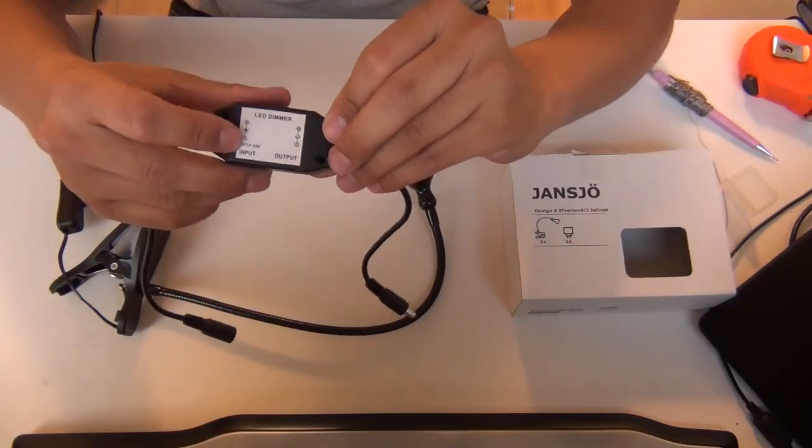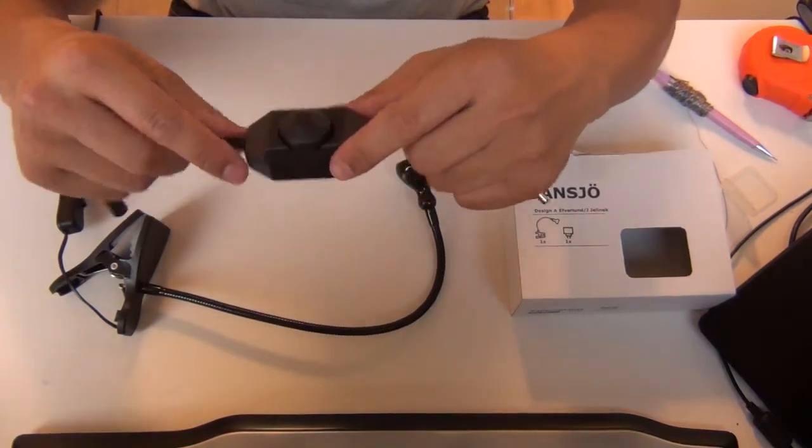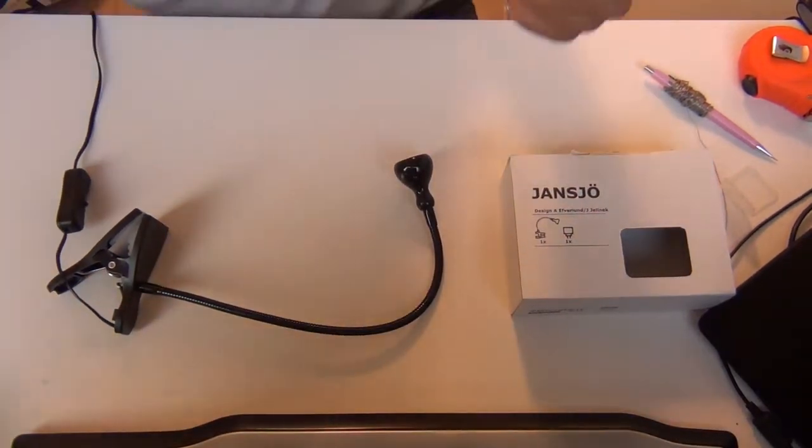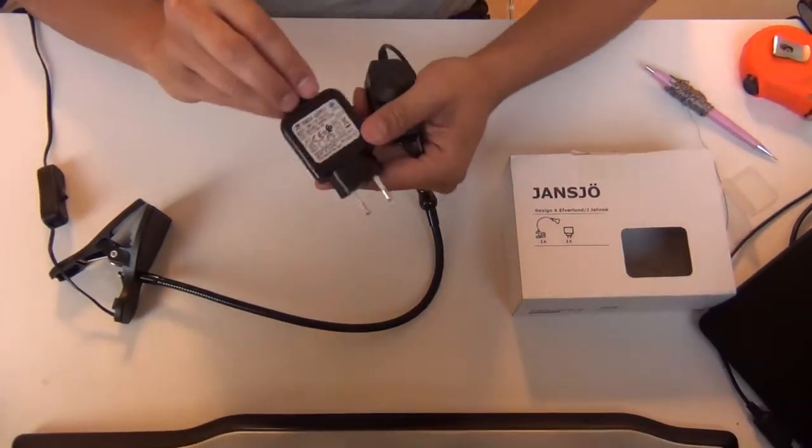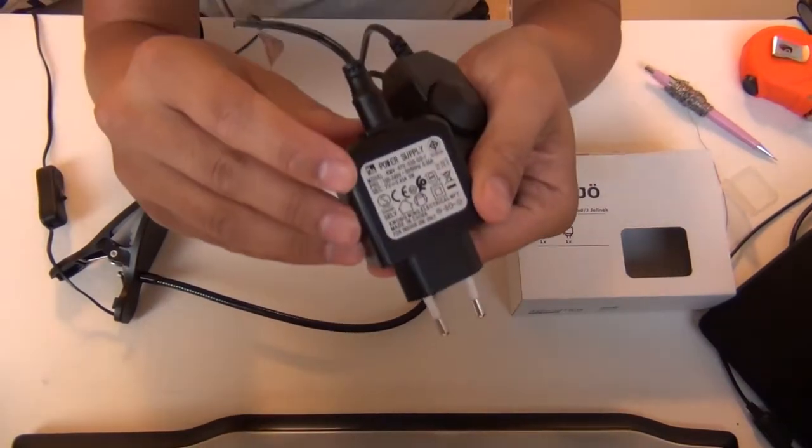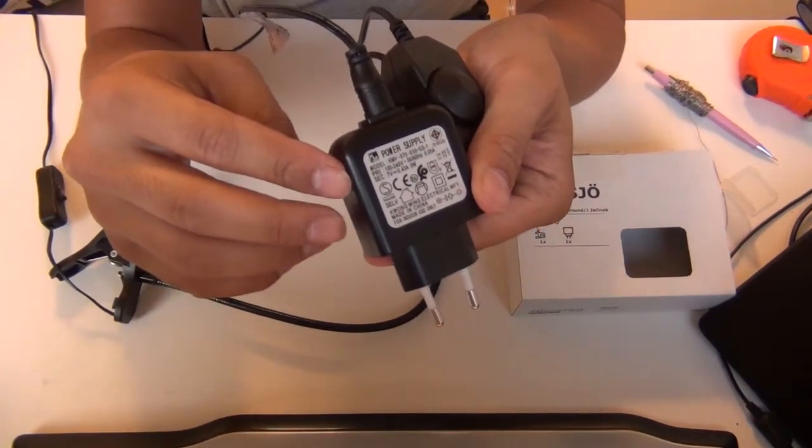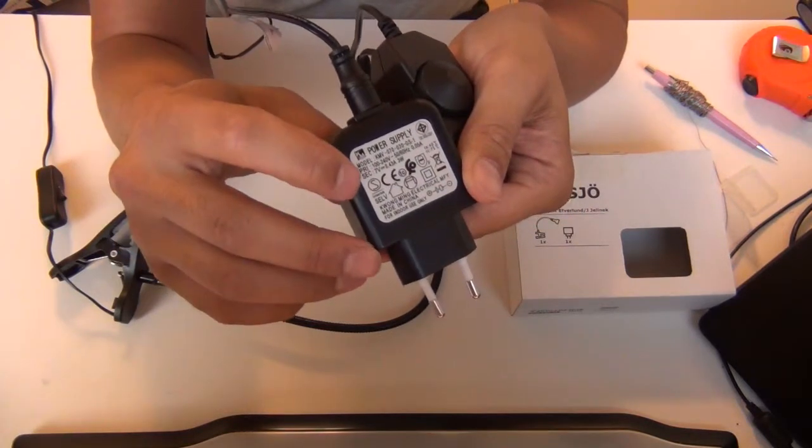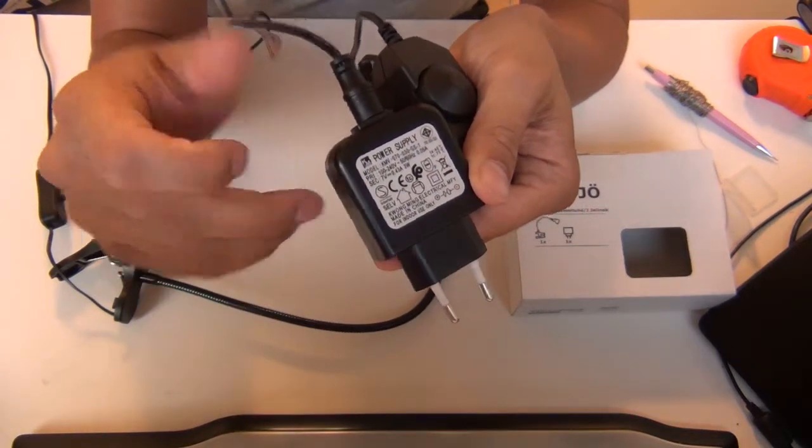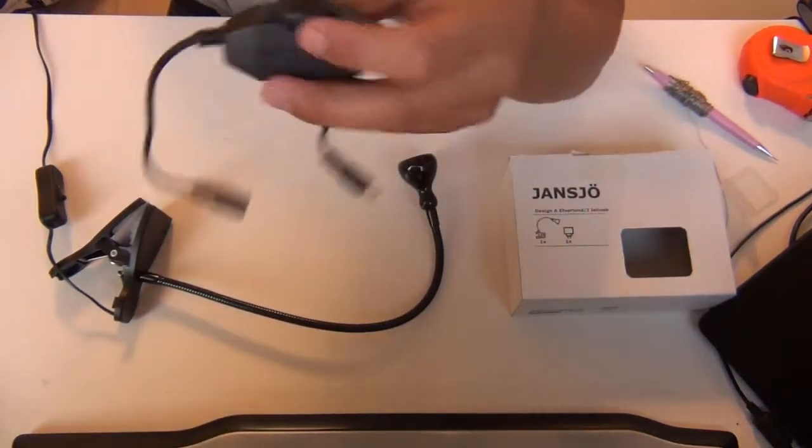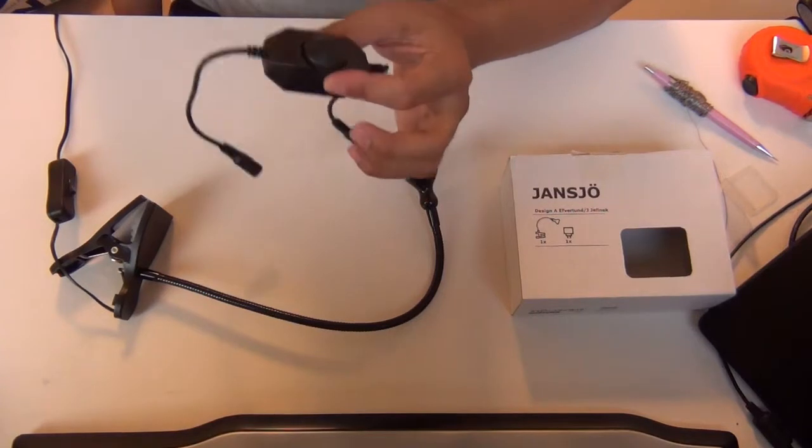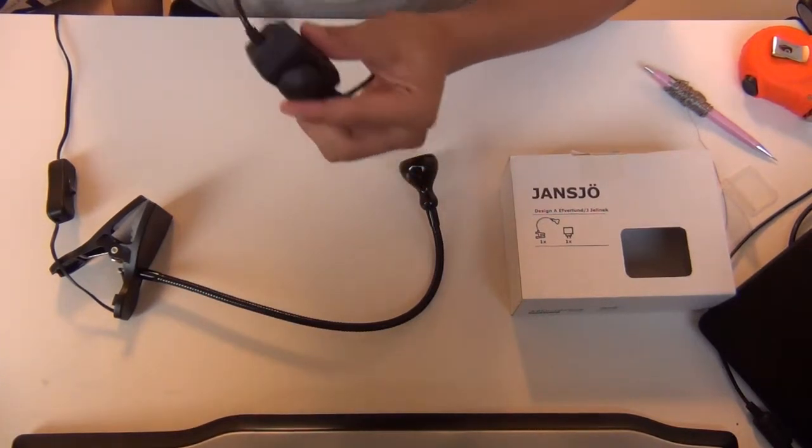It has these input outputs and it is designed for 12 to 24 volts. That's interesting because this little light actually works on 7 volts DC. This is the power supply from the LED from IKEA, as you can see it's 7 volts by 3 watts.